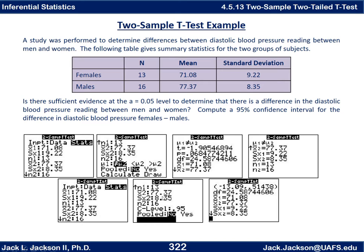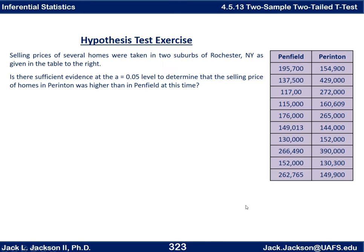We can also compute a confidence interval for the difference. That's a two sample t-interval. Again, we do STAT, TESTS, but this time choose two sample t-interval, select STATISTICS, enter in the same numbers as before, choose non-pooled, and hit calculate. There's our confidence interval, along with the degrees of freedom and other summary statistics.